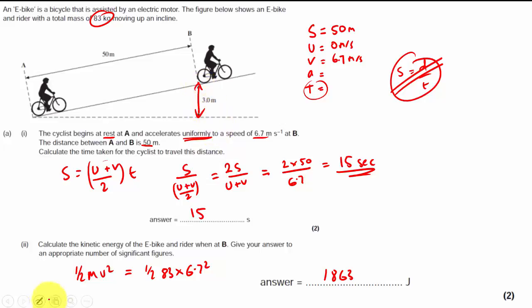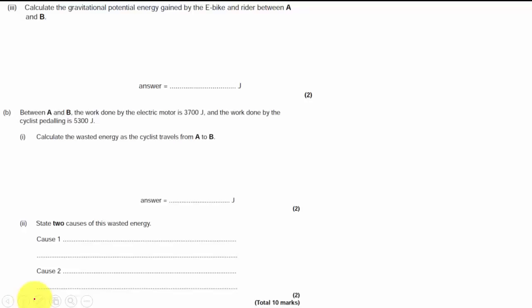So the gravitational potential energy gained is just worked out using the GPE formula. Gravitational potential energy equals mass times gravity times height. The mass is 83, gravity is 9.81, height was 3. So again crunching the numbers gets us to 2,443 joules. Next question.